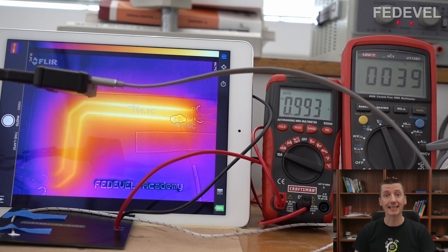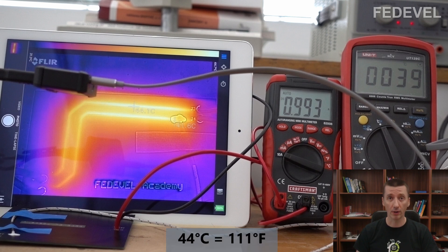We would like to know what is the temperature of the tracks for different currents. As you can see, right now we are running one amp through these tracks and the temperature here in this place is 44 degrees Celsius.